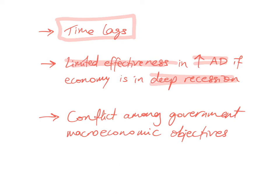The third limitation is the conflict among government's macroeconomic objectives. Any attempt to increase aggregate demand through expansionary monetary policy might boost employment and economic growth, but will sometimes raise the average price level and cause inflation. Conversely, a contractionary or tight monetary policy might bring down the average price level, but at the expense of higher unemployment and slower economic growth. This conflict among macroeconomic objectives does present real limitations to how effective monetary policy can be.